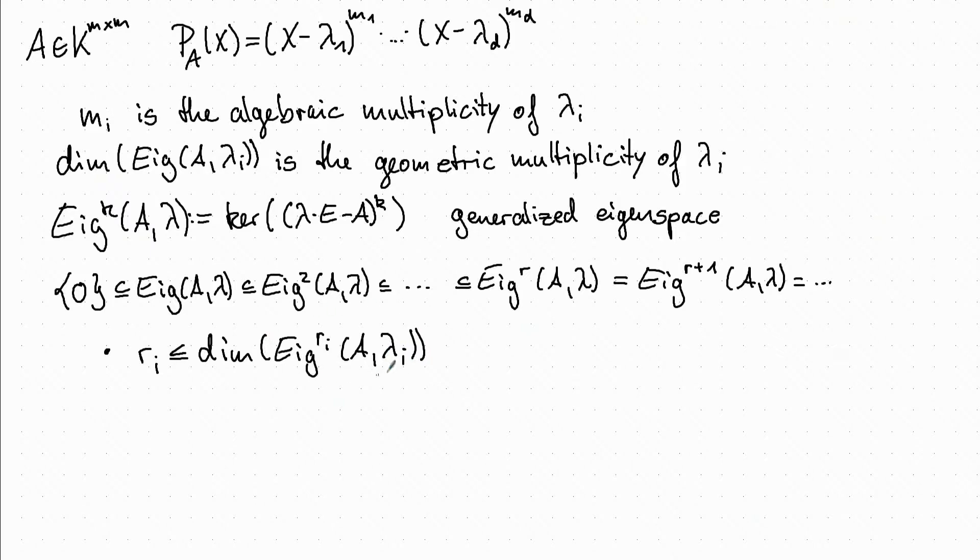And this is just equal to the algebraic multiplicity. The reason that this is the case is the next property where we have K to the n is a direct sum of the generalized eigenspaces.